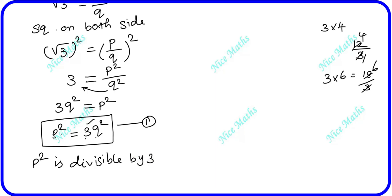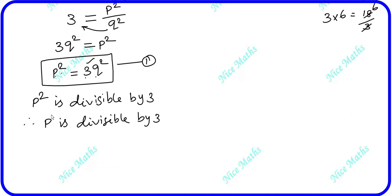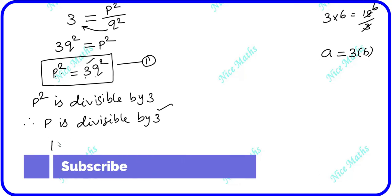Since p² is divisible by 3, and 3 is a prime number, p is also divisible by 3. Therefore, p is divisible by 3.